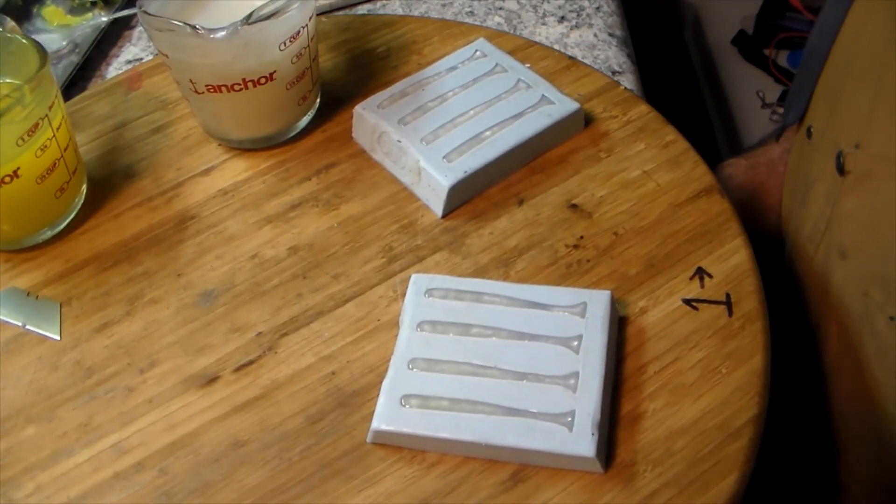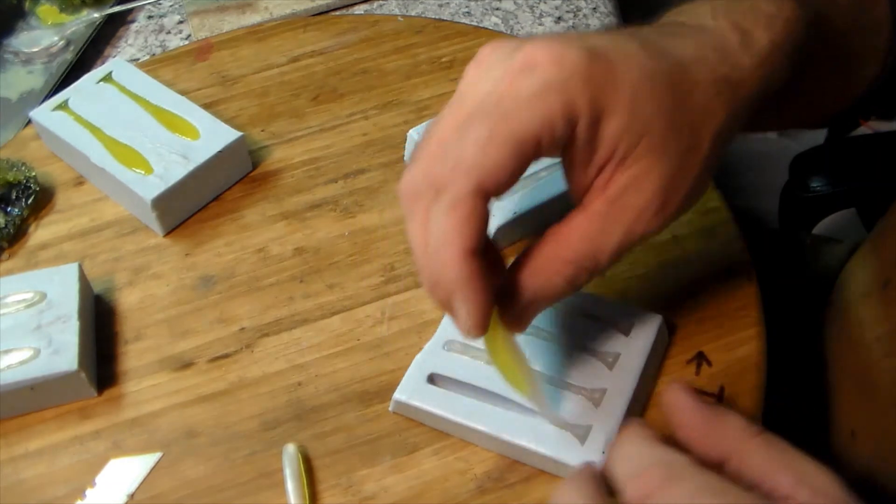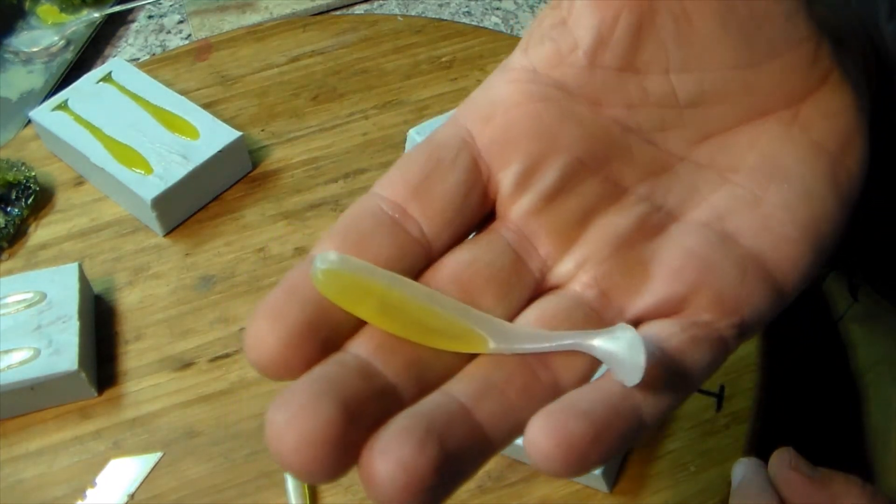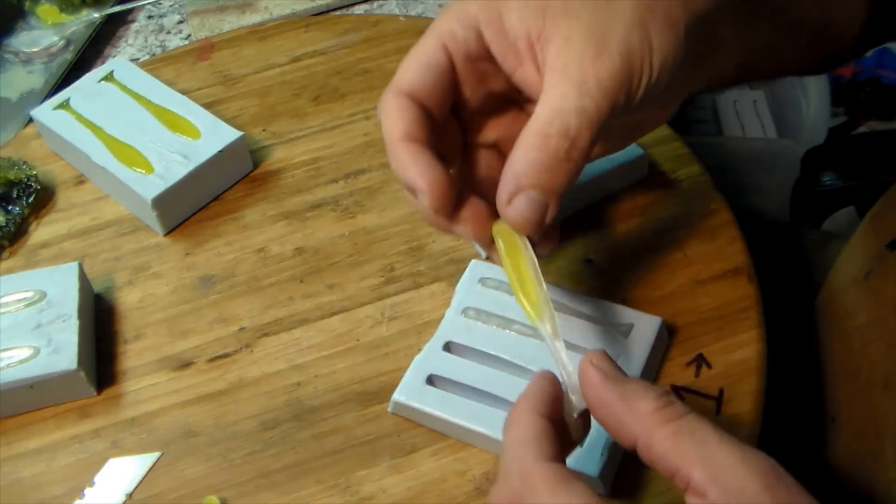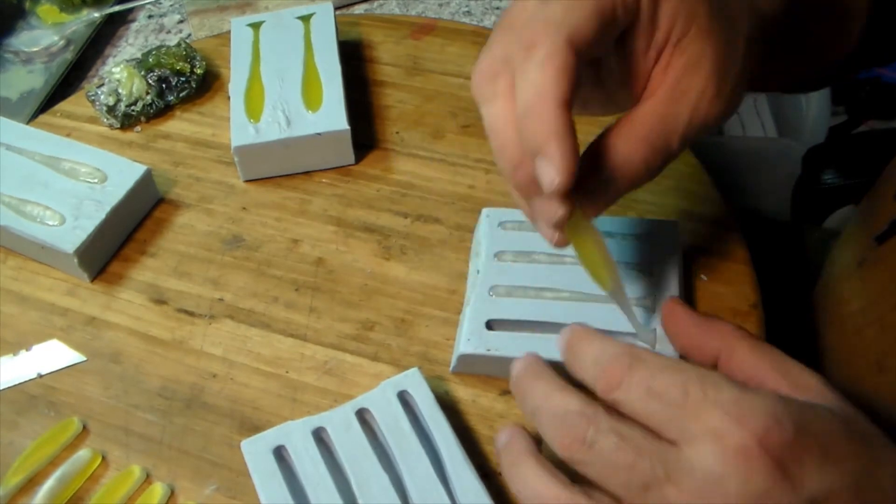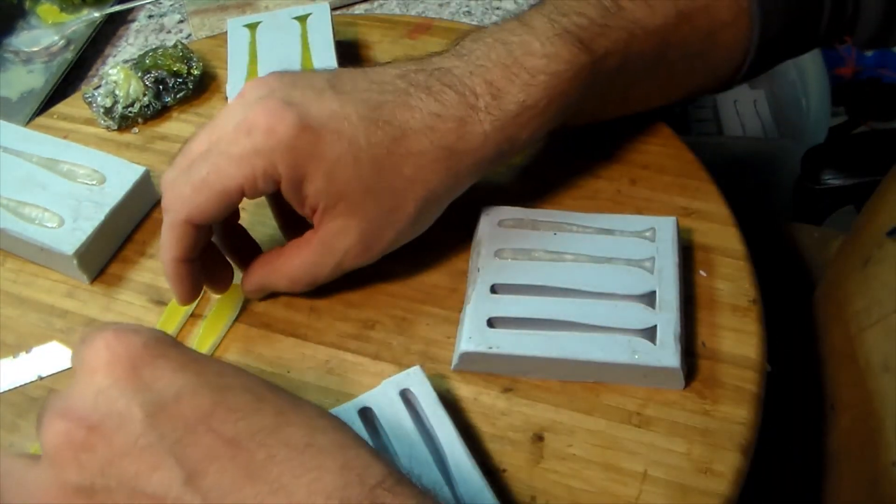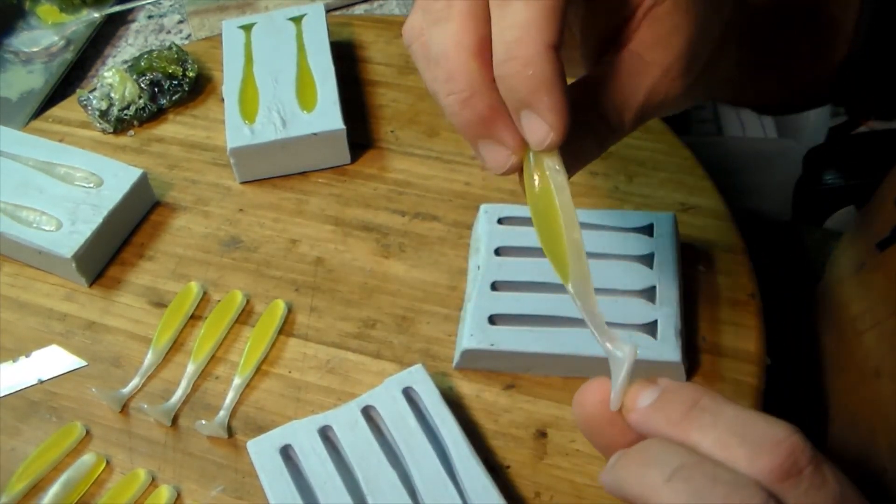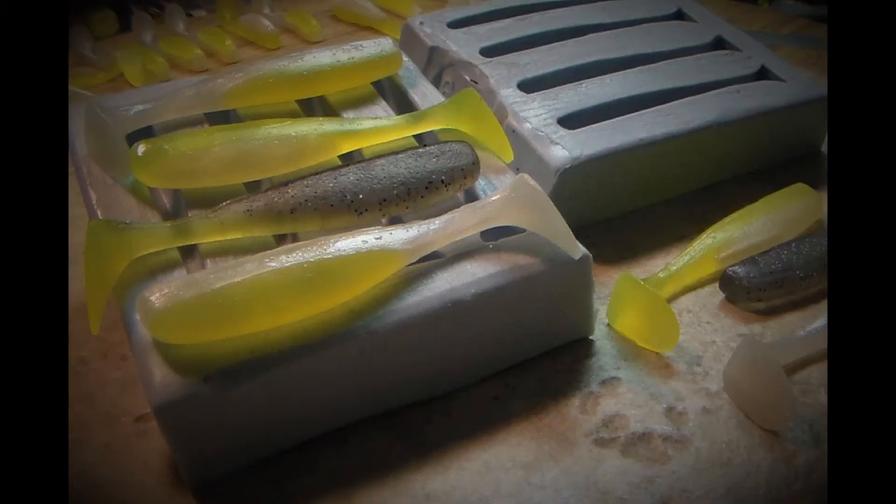Let them cool and pull them out. There we go, another round of swim baits poured up, ready to go in the box and do some fishing. Hope you guys like it. Got any other ideas, different styles you want me to pour, let me know.